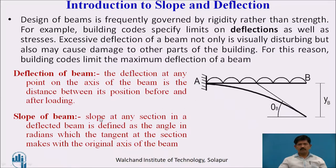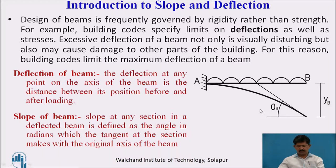Slope of the beam: the slope at any section in a deflected beam is defined as the angle in radians which the tangent at the section makes with the original axis of the beam. In the deflected shape, I have drawn a tangent, and this angle theta is the slope of the beam.